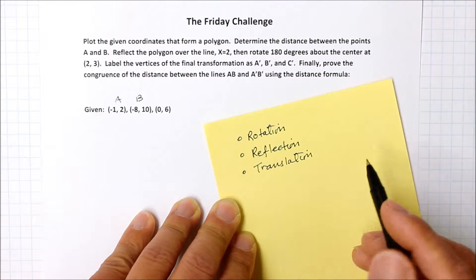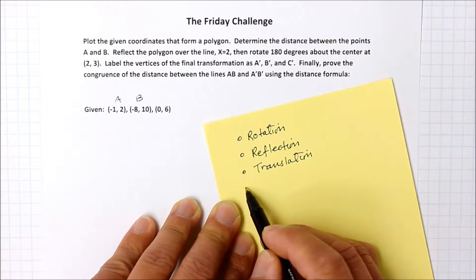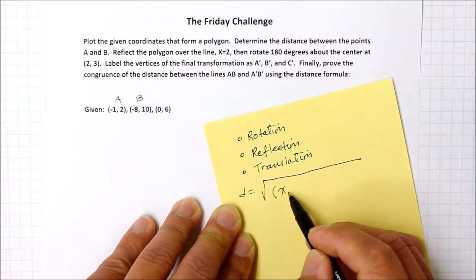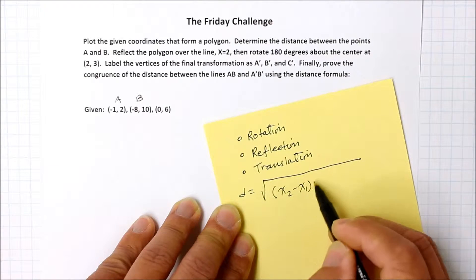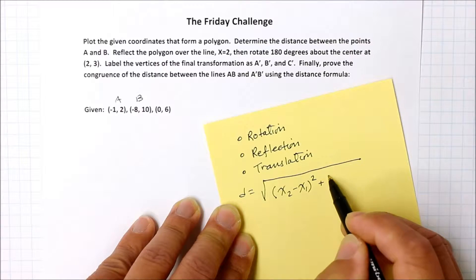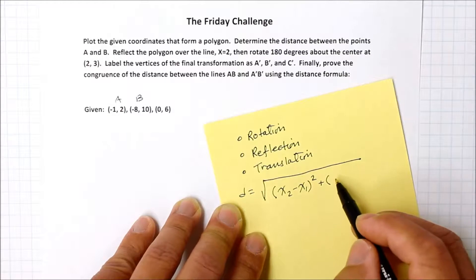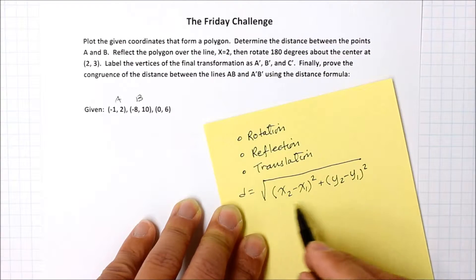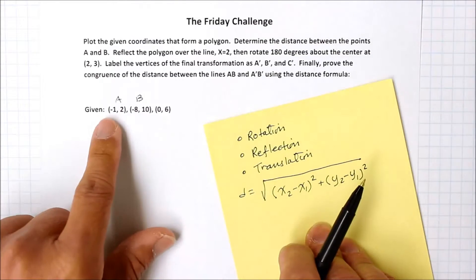If you remember from the past, the distance formula between any two given points is the square root of the difference of the two x-axis, x2 minus x1 squared, plus the difference of the two y coordinates, y2 minus y1 squared. We're going to use this formula to determine the points between A and B.